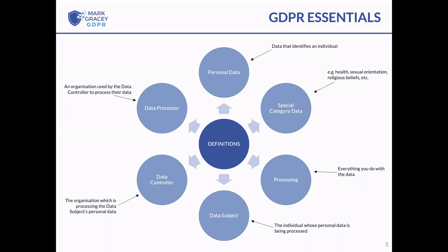There is a subclass of personal data called special category data. The GDPR requires you to take extra special care with this data, and there are extra conditions that need to apply to its processing. It includes things like health and medical information, sexual orientation, religious beliefs, trade union membership, biometric data used for identification purposes, genetic data, and recently, potentially whether you follow the ethics of veganism or similar beliefs about the way you live.